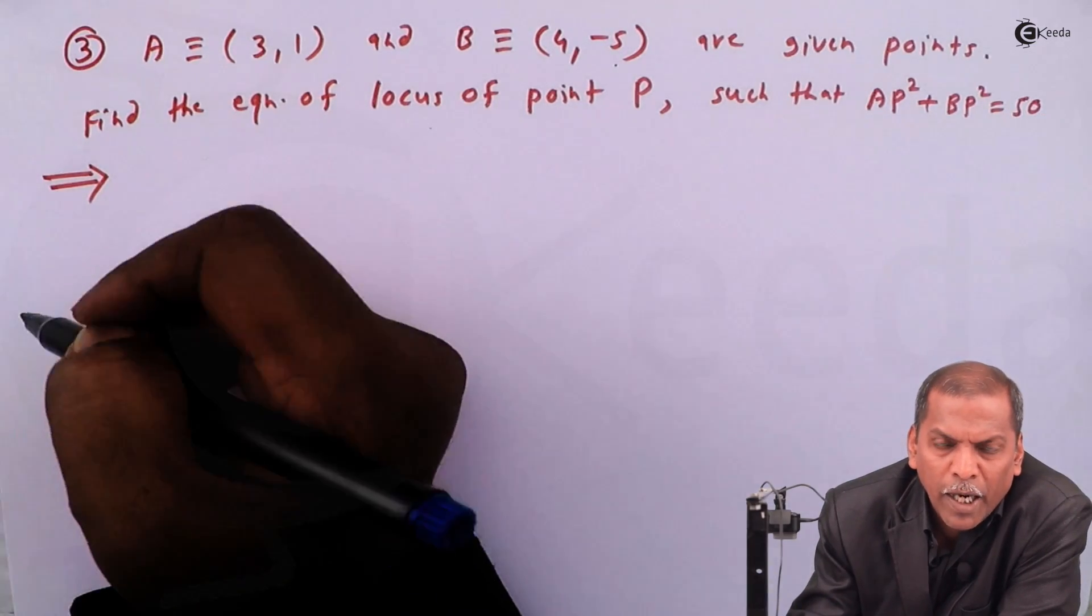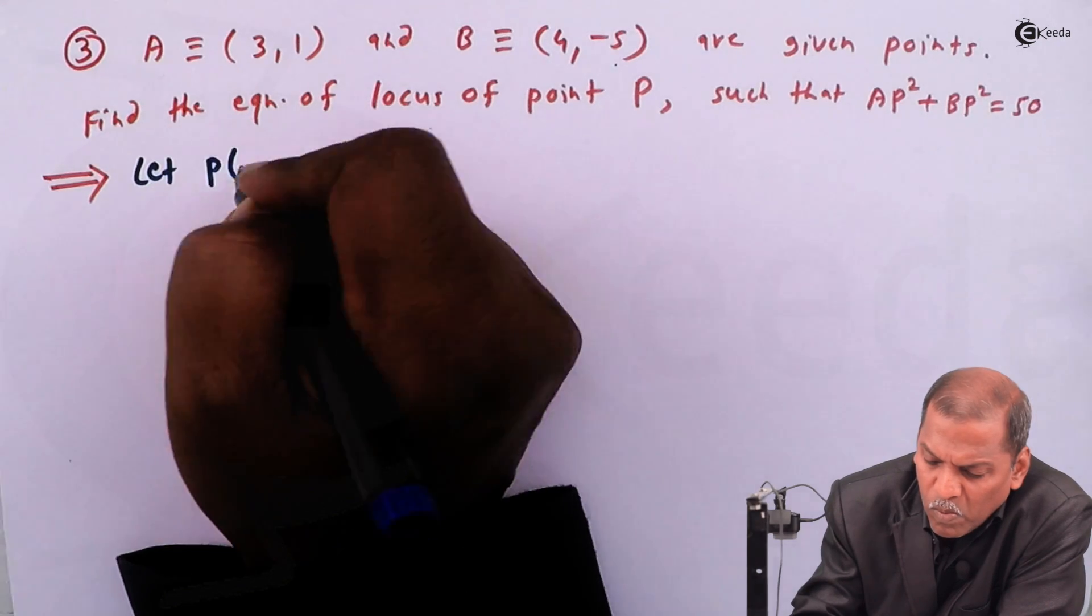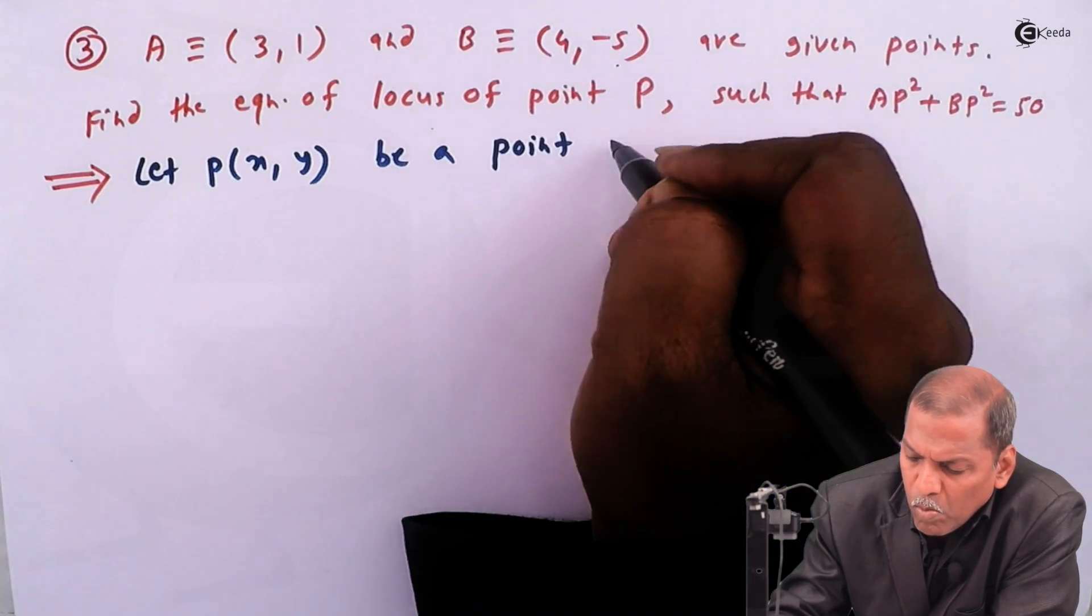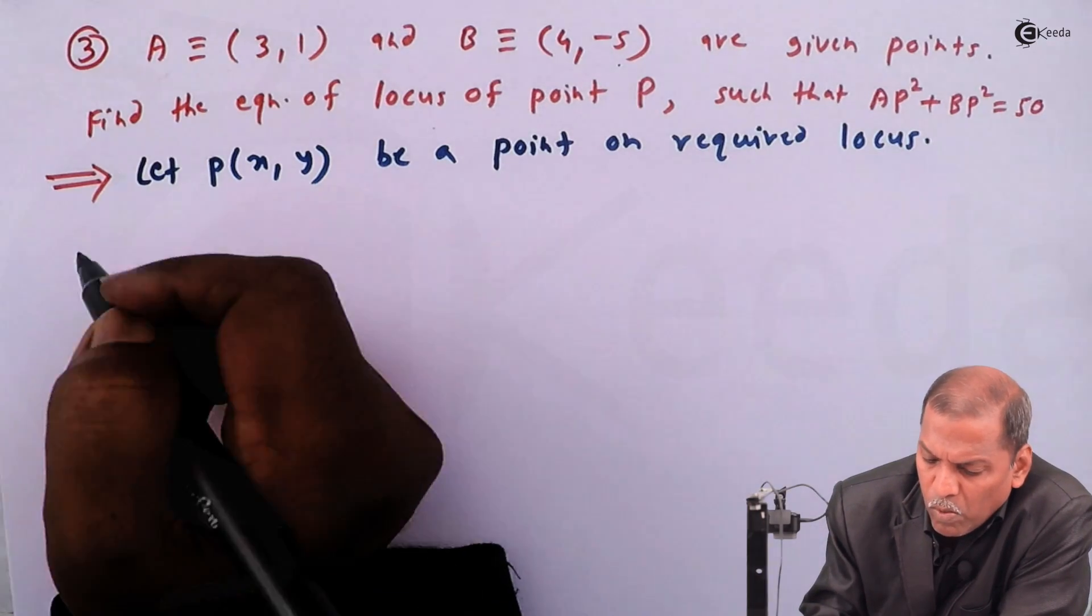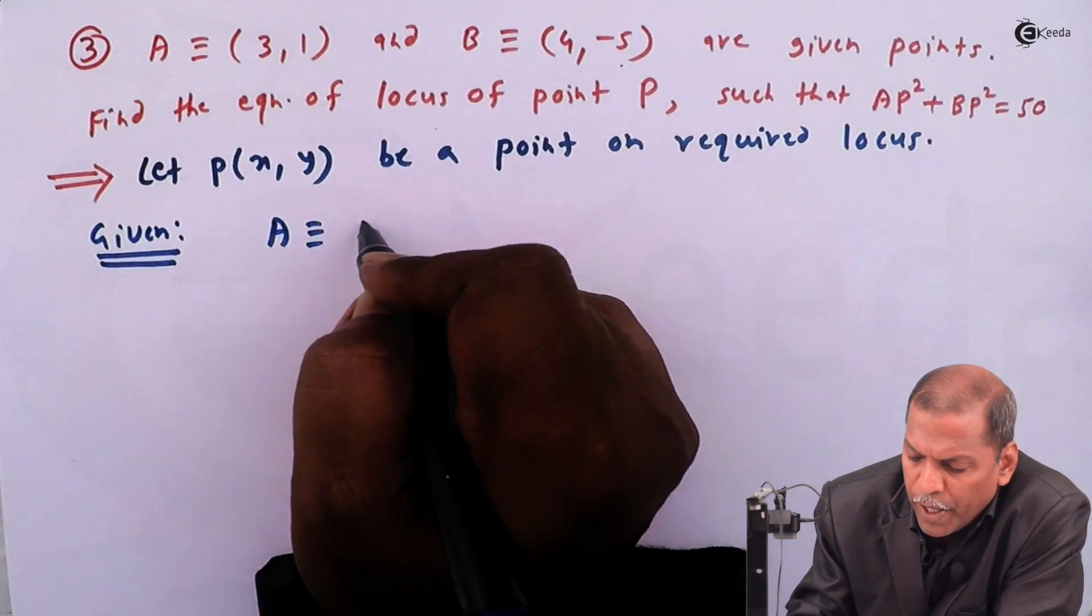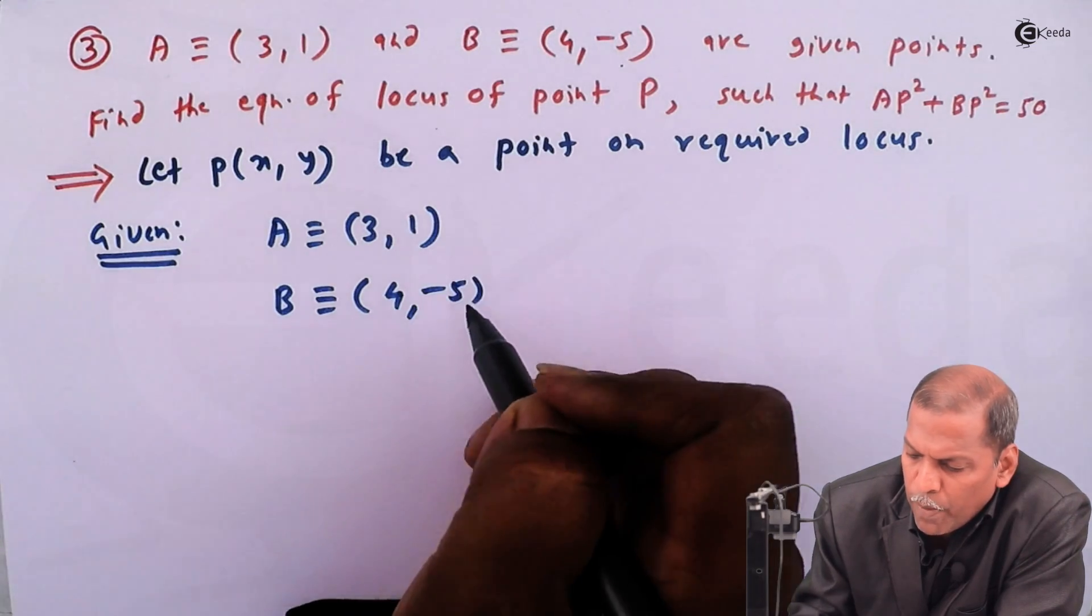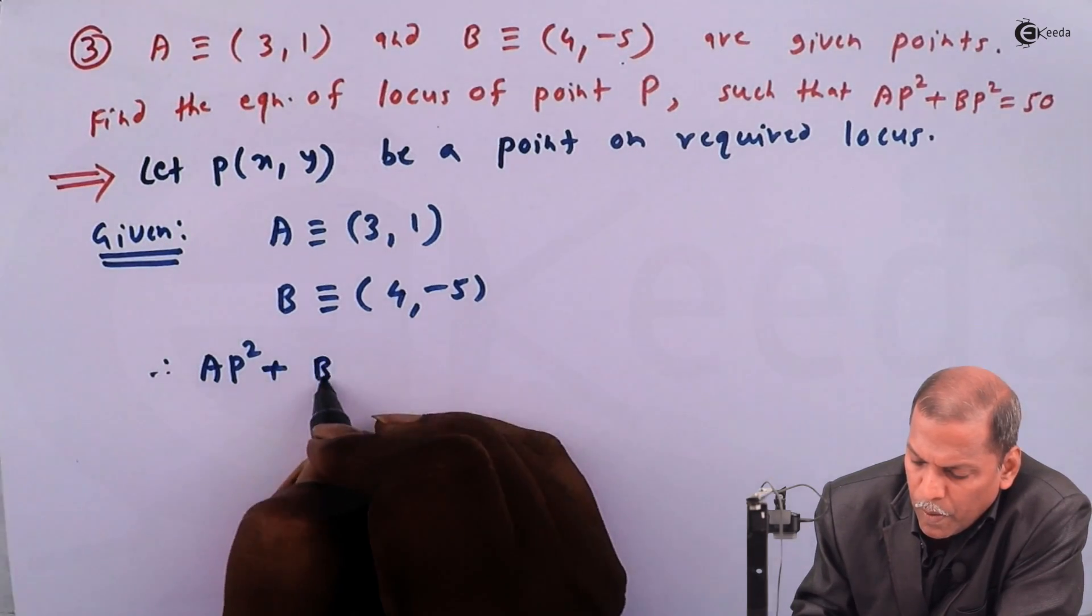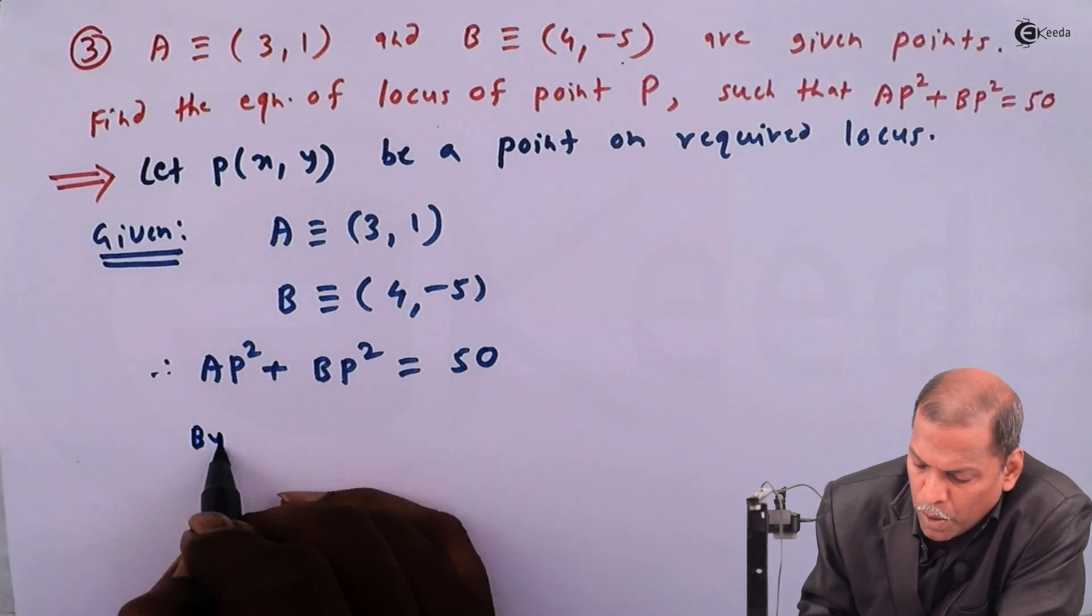Now let's see the solution. Let P(x, y) be a point on required locus. Point B equivalent to (4, -5) and the important condition that AP² + BP² is equal to 50. So now by distance formula, we have...